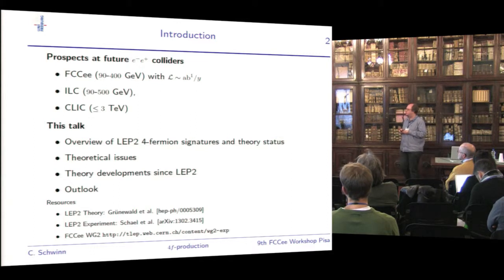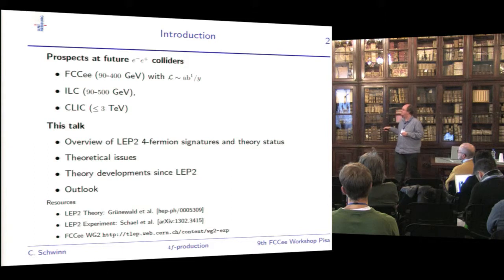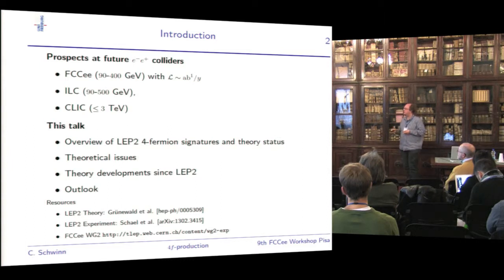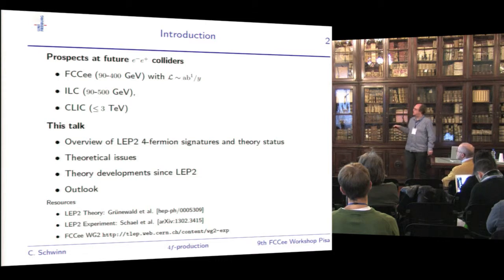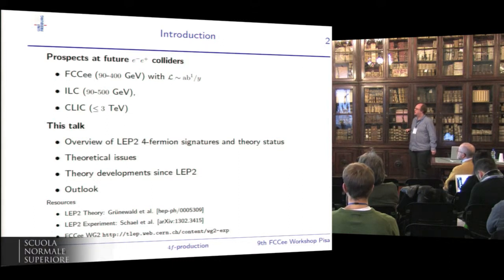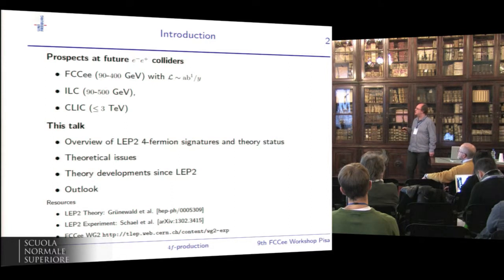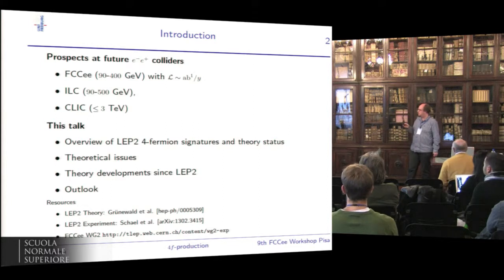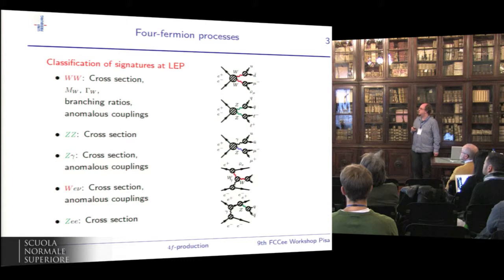For this talk I was asked to give an overview of the LEP2 experience. The recommended source for the theory status is the report by Grunewald et al., and the experimental analysis appeared two years ago on the archive. For the FCC-EE work there is a relevant working group webpage. After giving an overview of the signatures considered at LEP2, I will discuss theoretical issues arising in the description of fermion production, compare the LEP2 results to the theory status, outline what happened on the theory side after LEP2, and give an outlook on improving the theoretical description.